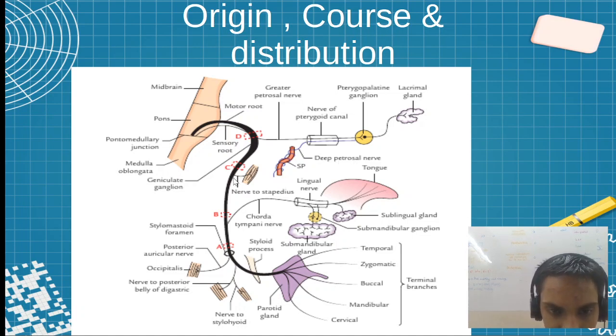Now we will see the geniculate ganglion. From here, nerve to stapedius, the stapedial branch. Then it has chorda tympani and lingual branch. The lingual branch relays into submandibular ganglion which supplies the gland of the same name and the sublingual gland.